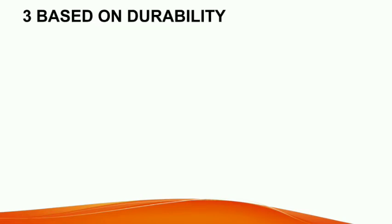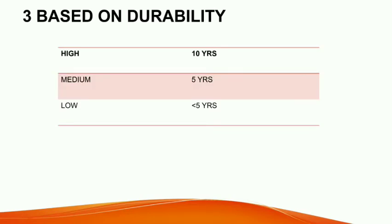Next is classification based on durability. Timber can be classified as highly durable, medium durable, and low durable. High durable trees will last more than 10 years. Medium durable trees will have an average life of about 5 years. Low durable trees will last only below 5 years.